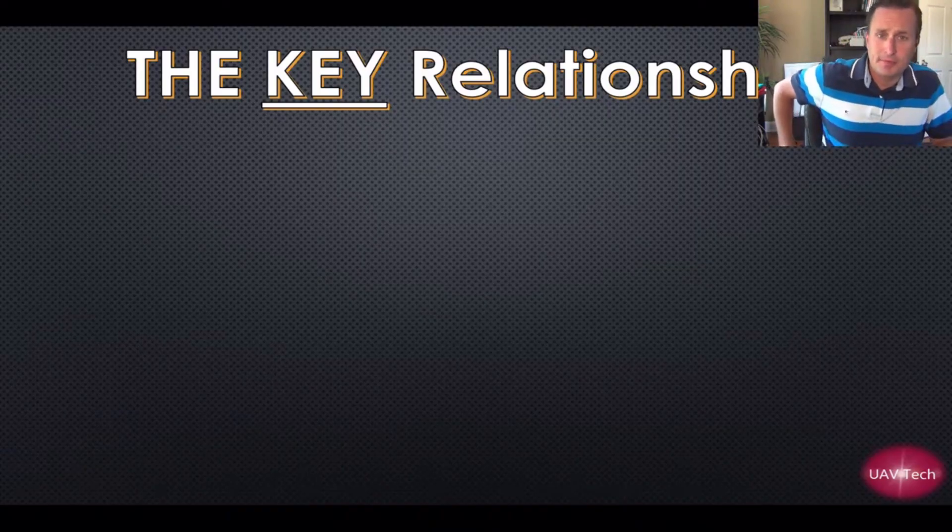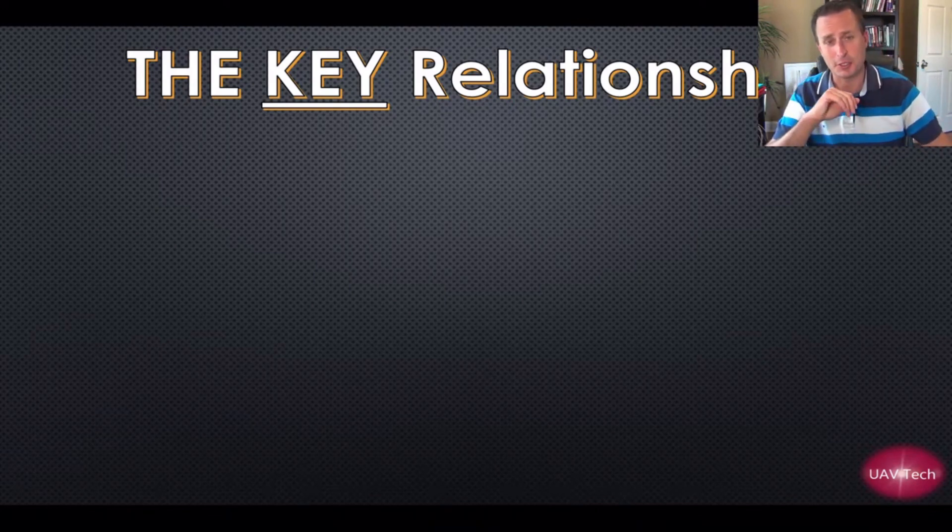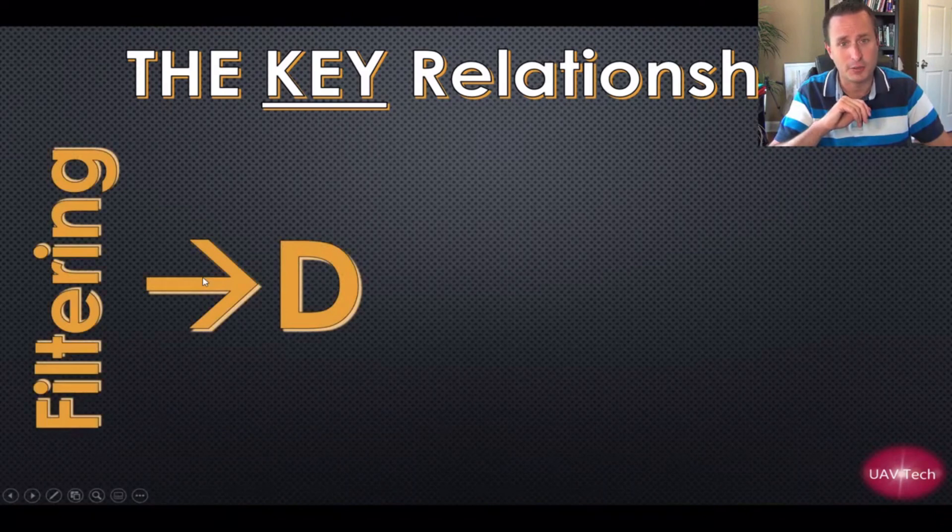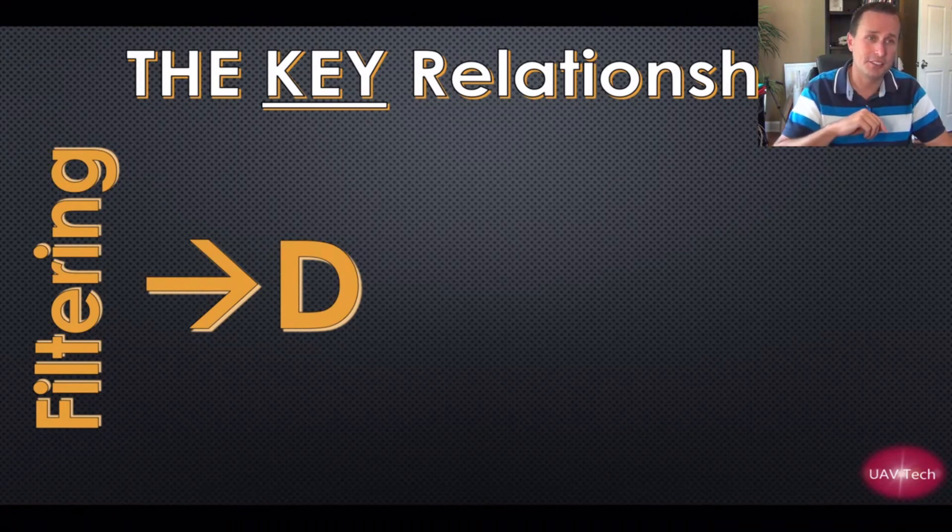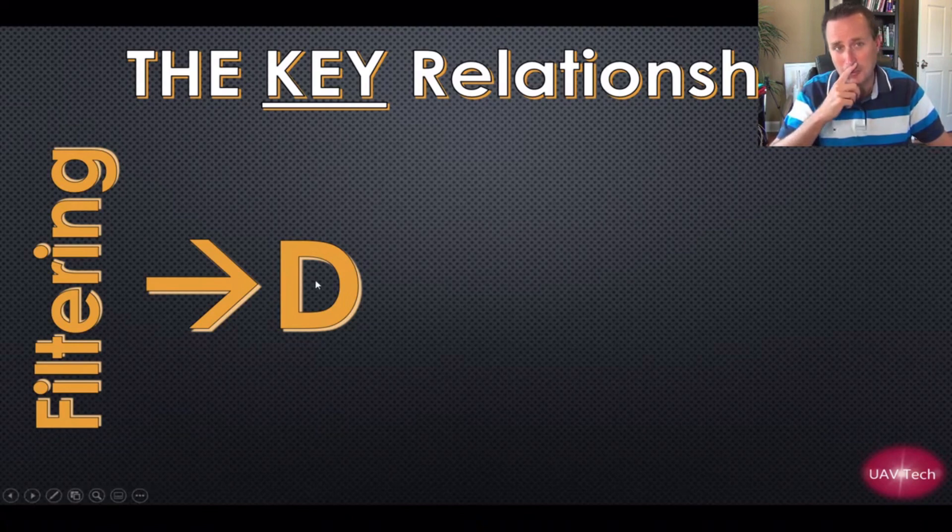In PIDs there's key relationships between the terms, and the key relationships are what's so important - it's not the gains themselves, it's the relationships between them. The first is there's a relationship between the filters and the D term. It's this arrow that matters. You can have any given D term for any different given filtering - what is the difference?